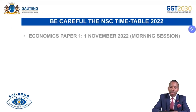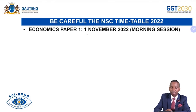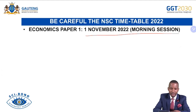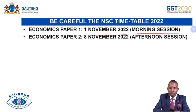We are writing Economics Paper 1 on the 1st of November in the morning session, and Economics Paper 2 on the 8th of November 2022 in the afternoon session. For Paper 2, you will start writing at 2 o'clock up to 4 o'clock as the paper is 2 hours. Arrive on time — you must be there an hour before the commencement of the examination.